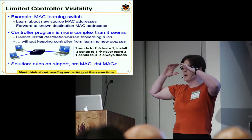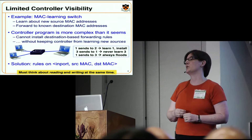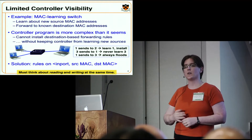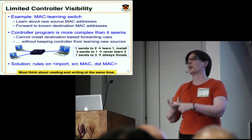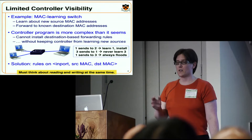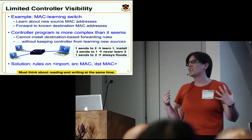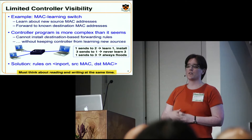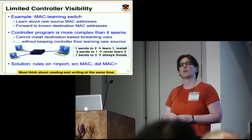The solution is to think ahead of time about what the controller needs to see — every time there's a new source MAC on a new port — and what it needs to do, which is forward on destinations, and do the cross product of those things. It has to install rules based on input port, source, and destination, mixing the part that does MAC learning with the part that does forwarding to known and unknown destinations. In this simple example it's 20 lines, but the coupling between reading state from the network and writing to the network is quite painful. The first thing we need is the ability to reason about reading network state separately from writing network state.